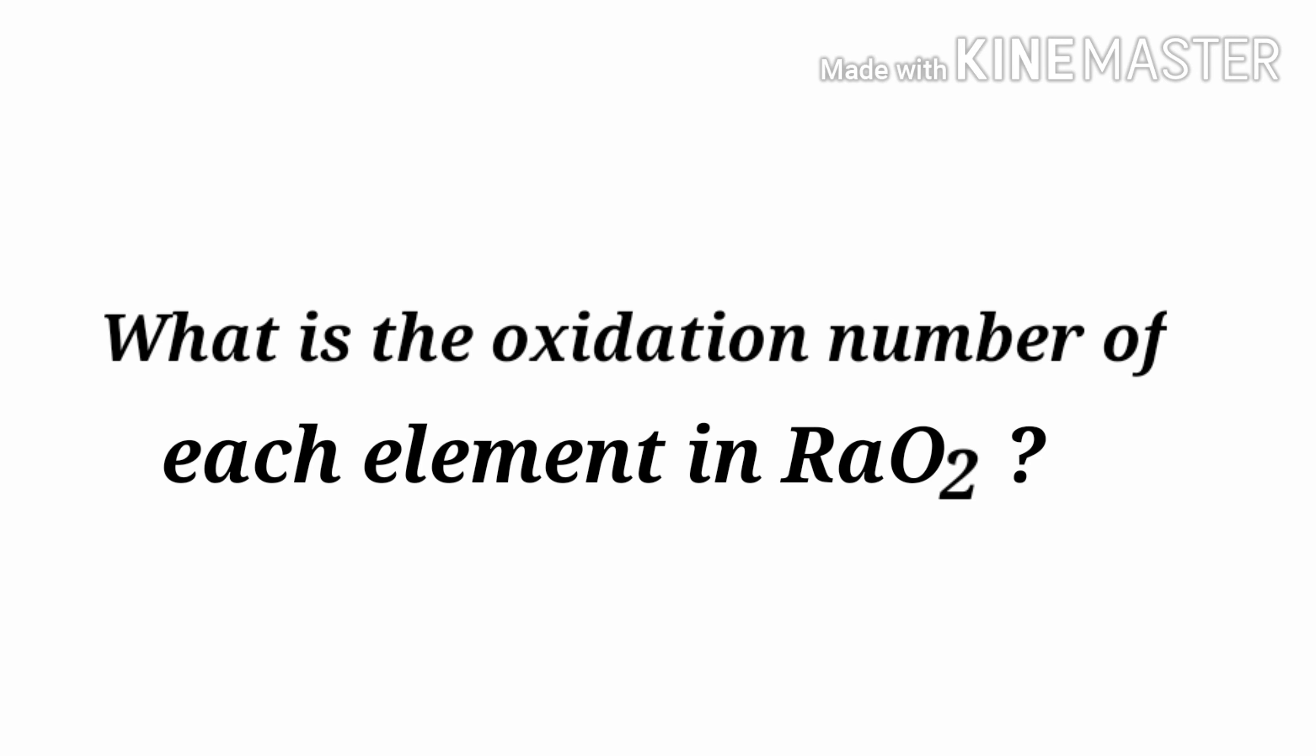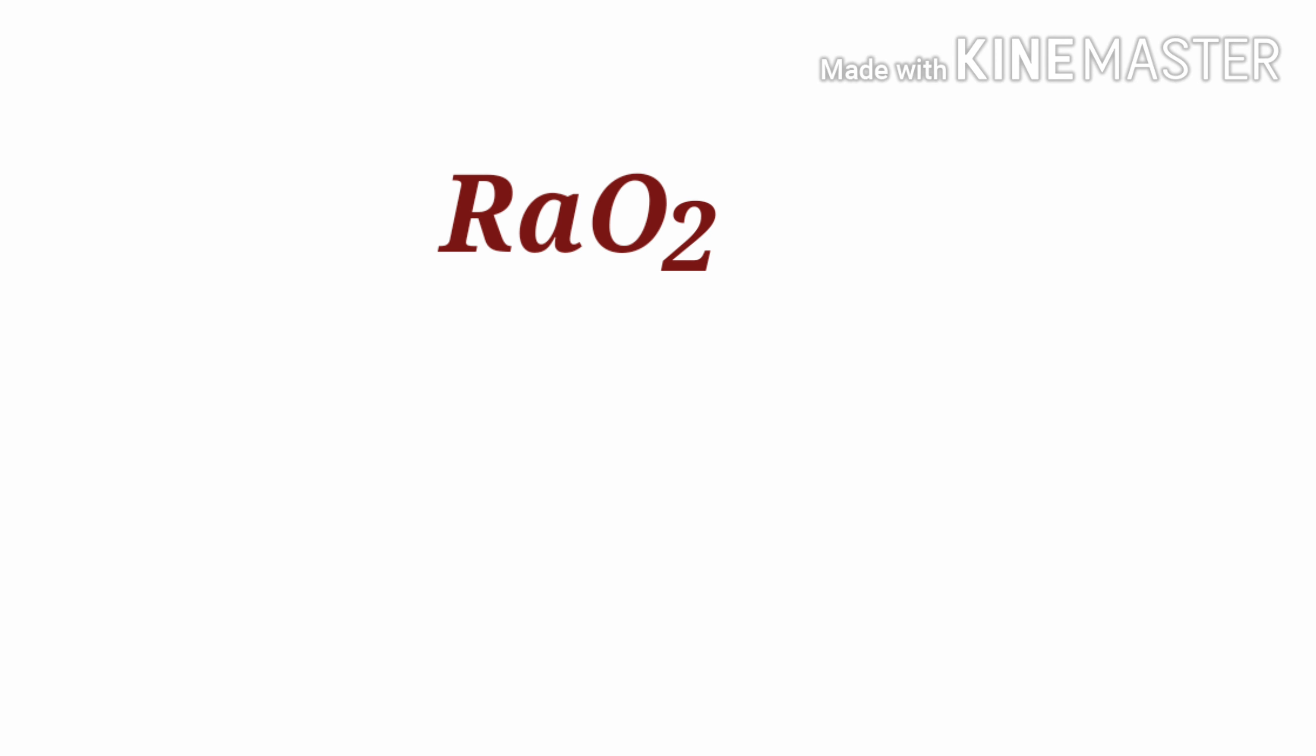What is the oxidation number of each element in radium peroxide? We can use the oxidation number rules to determine oxidation numbers. Radium peroxide is a neutral compound with overall oxidation number zero, therefore we know that the sum of the oxidation number of atoms is equal to zero.